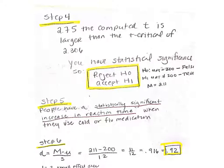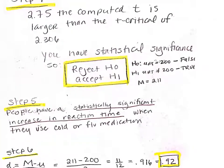Step 4: our computed t of 2.75 is larger than the t-critical of 2.306. So we have statistical significance — we can reject the null hypothesis and accept the alternative. Rejecting the null hypothesis means the statement that the population mean equaled 200 is false, because our reaction time of 211 for our sample was way out in the tails. We therefore accept the alternative hypothesis and say that it is true.